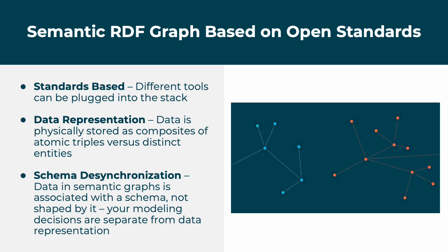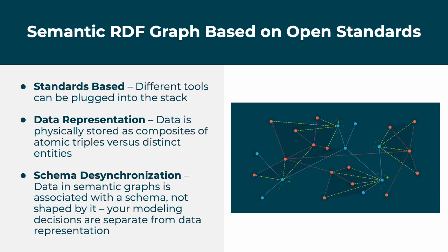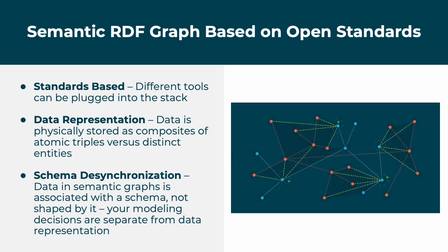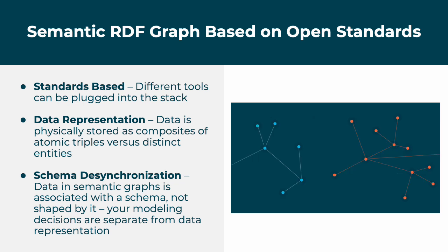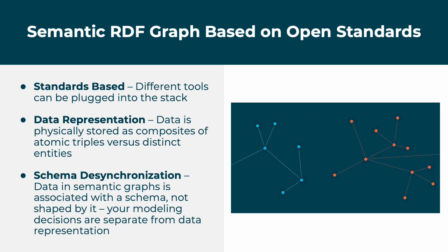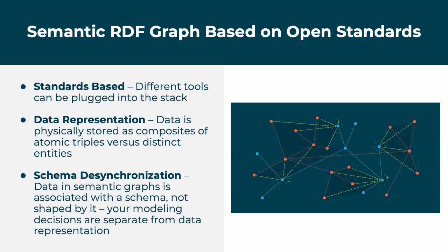Stardog is based on open standards so that we can interoperate with your existing and future technology stack. Your data is stored as composites of atomic triples versus distinct entities. One analogy for this is thinking about your data as a collection of Legos — would you rather have your data comprised of hundreds of smaller Lego blocks or just a handful of larger Lego blocks? Having smaller atomic triples provides more flexibility, making it easier to reuse data, identify connections between entities, and make more sophisticated data connections.